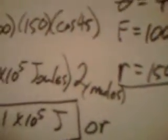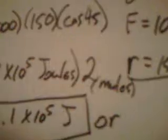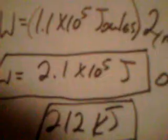We multiply that answer by 2 because there's two mules, and each mule does 1.1 times 10 to the fifth joules. So the total amount of work done is 2.1 times 10 to the fifth